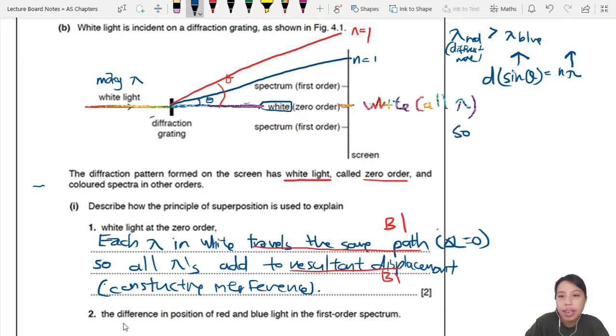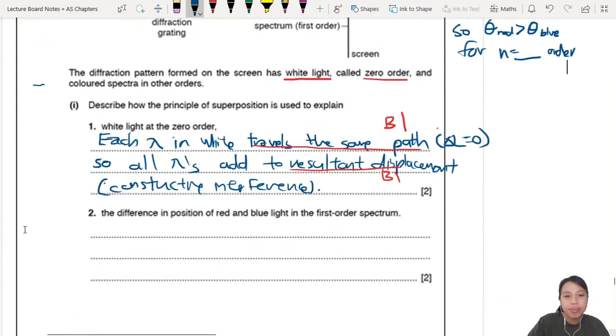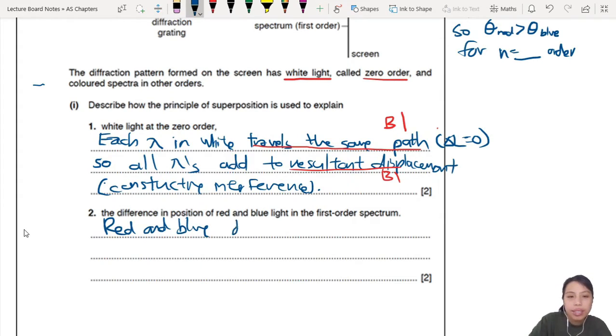Longer wavelength, larger diffraction angle. So therefore you can say your angle of diffraction for red is also bigger than angle of diffraction for blue for any order. For n equals to whatever order. First order you compare first order, second order compare. So we need to describe this. How are we going to describe this thing?